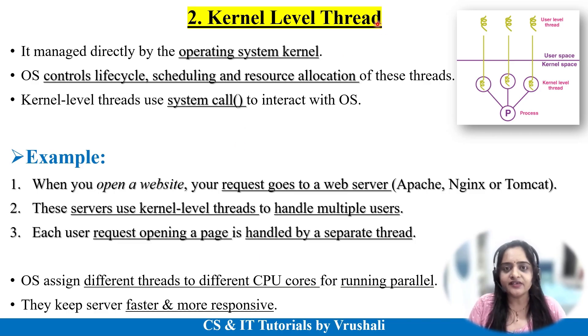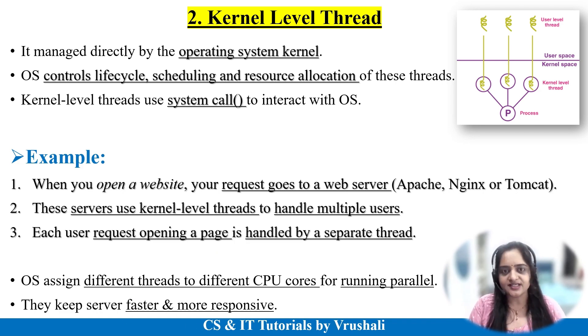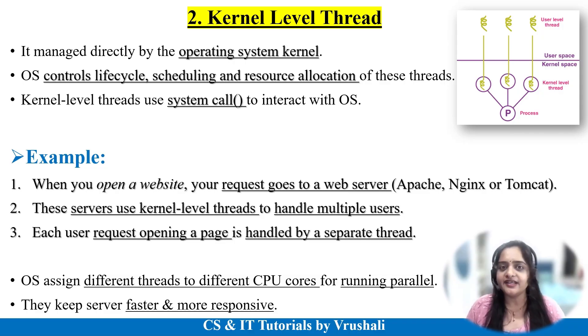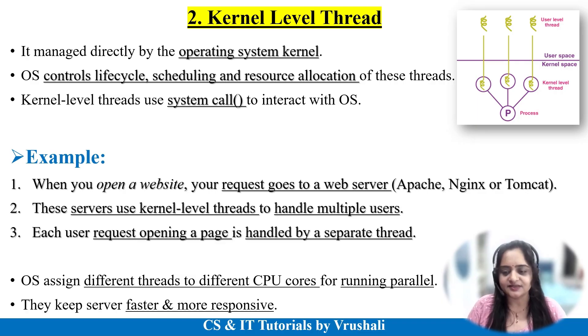When you open a particular website, your request goes to a web server — there are multiple web servers like Apache and Tomcat. Assume there is one website and five persons open the same website at the same time. The operating system creates five threads at a time using kernel level functionalities to serve every individual user simultaneously. This is the work of kernel level threads — to handle multiple users and multiple functionalities at the same time. The operating system assigns different threads to different CPU cores for parallel execution, so every user gets their response quickly. This is how kernel level threads improve server responsiveness and accuracy.